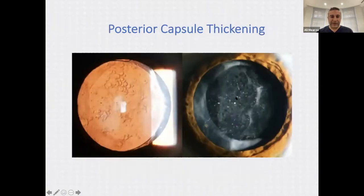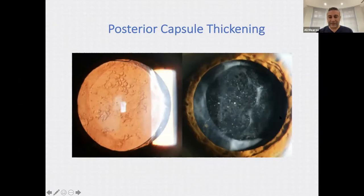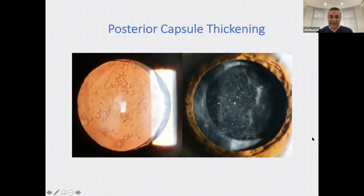Posterior capsule thickening occurs because when we do cataract surgery, we leave the lens capsule behind, and it can thicken up over time, affecting vision. This is easily treated with a YAG laser in the clinic — we apply laser pulses at the lens capsule through a device — a five-minute procedure which solves the problem.